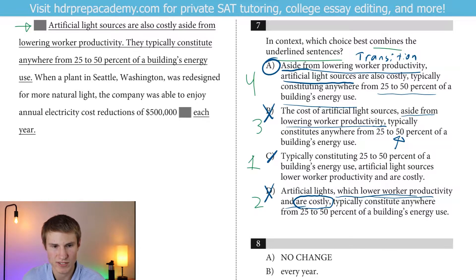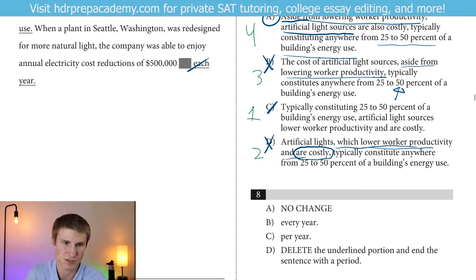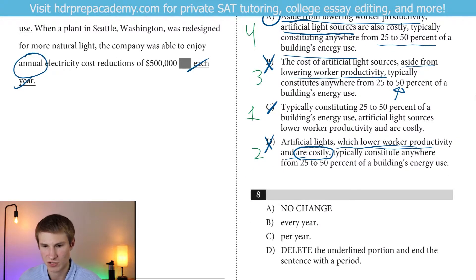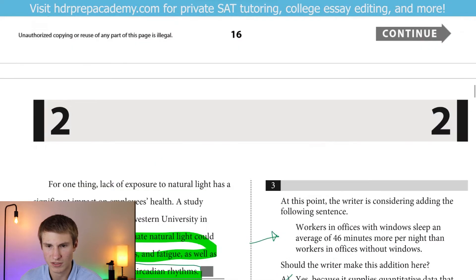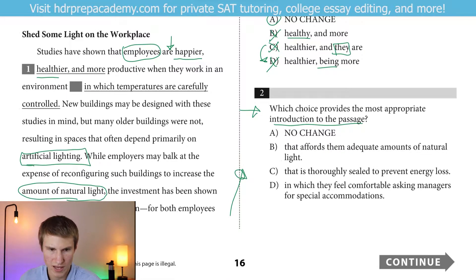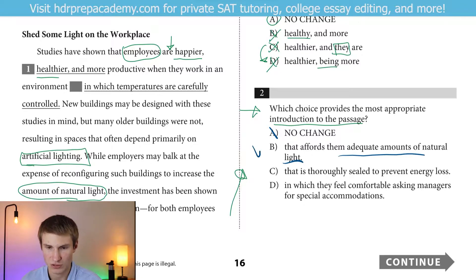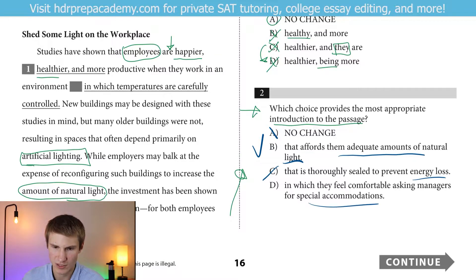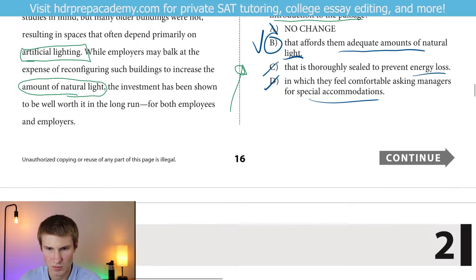When a plant in Seattle, Washington was redesigned for more natural light, the company was able to enjoy annual electricity reductions of $500,000 each year. We don't have to say 'each year' because we said 'annual,' which indicates it's each year. So we're just going to delete that. Our answer there for number 8 would be D. Now let's go back up and answer number 2. We ultimately want to talk about natural light, so we can get rid of A — that talks about temperatures. Answer B: 'that affords adequate amounts of natural light' — that looks correct. C is about sealing to prevent energy loss — no. D is about special accommodations — no. Answer would be B.